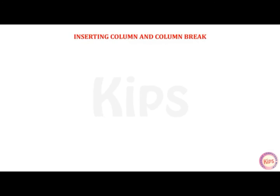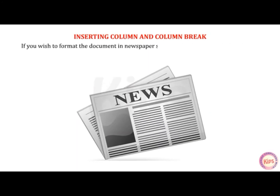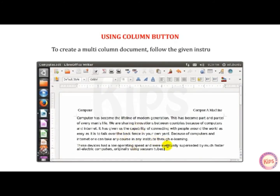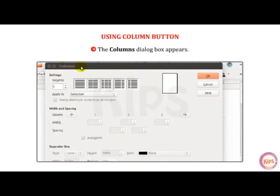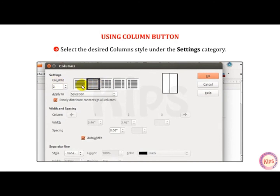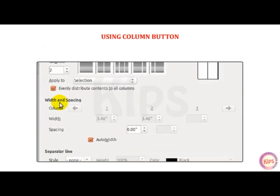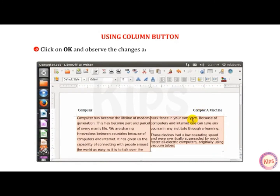Let us now talk about how to insert columns and column breaks. When you type in LibreOffice Writer, by default the text is displayed in a single column style. If you wish to format the document in newspaper style, Writer enables you to create a document in two or more columns. To create a multi-column document, select the text, click on the Format menu, Columns option. The Columns dialog box appears. Select the desired column style under the Settings category or set the number of columns using the column selector button. You can adjust its width and spacing using the respective spin boxes. You can use the Separator Line option to add lines between columns. Click OK and observe the changes.